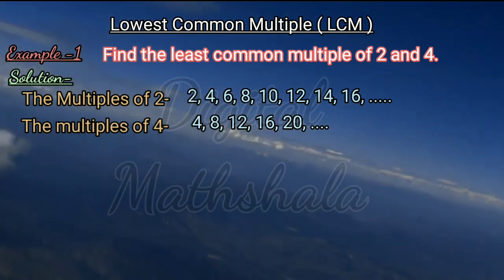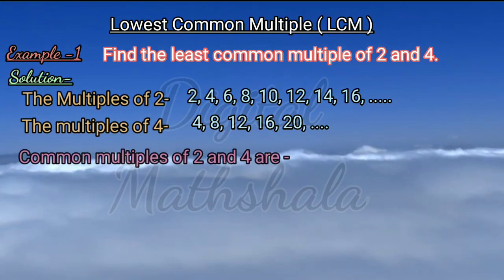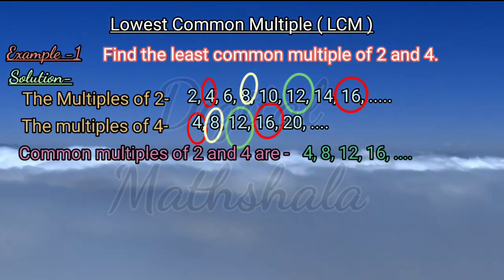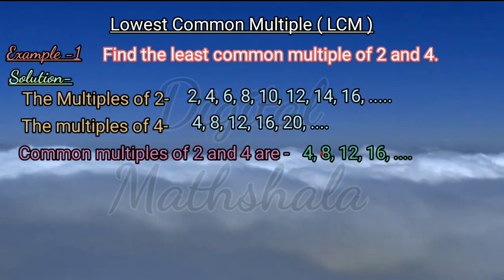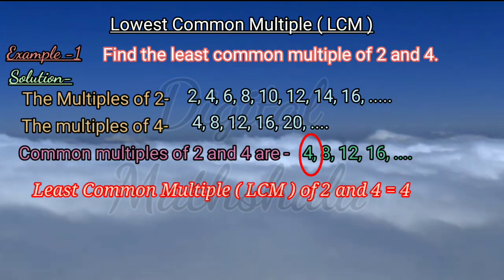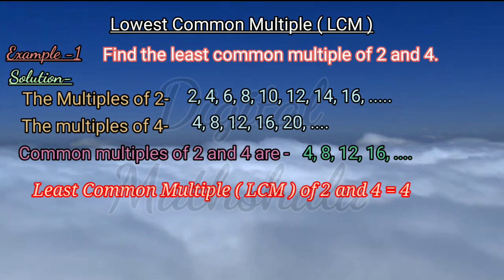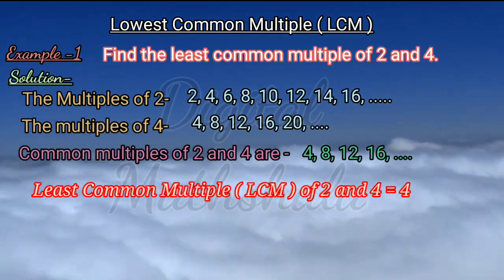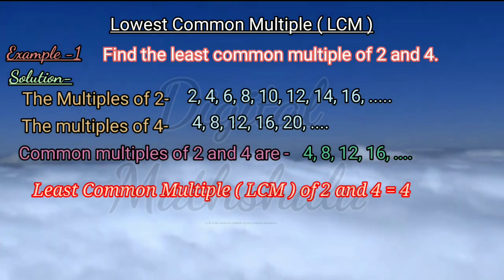Here the LCM is 4 because it is the least common multiple. Thus we can say that the LCM of 2 and 4 is 4.